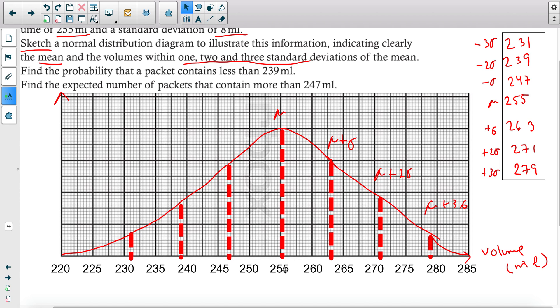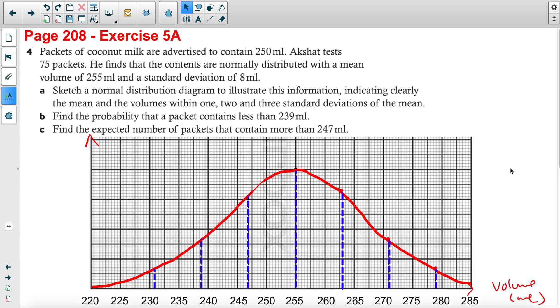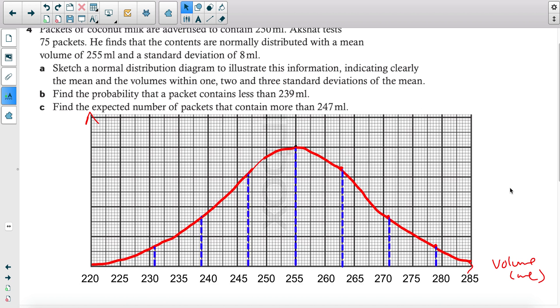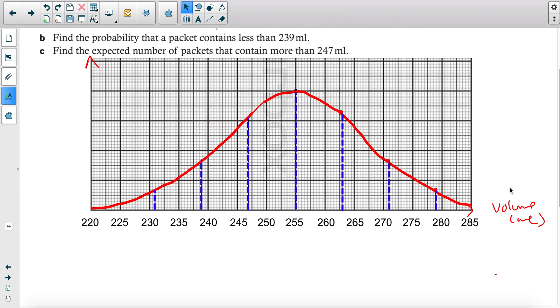Be careful with reading the scale as well. Since I picked a scale of 5, each point represents 0.5, and I need to go two ticks to get to 256, for example. Make sure you're reading the scale properly. For part B, it asks to find the probability that a packet contains less than 239 ml. For each probability question, I would recommend you always highlight the area that you need.